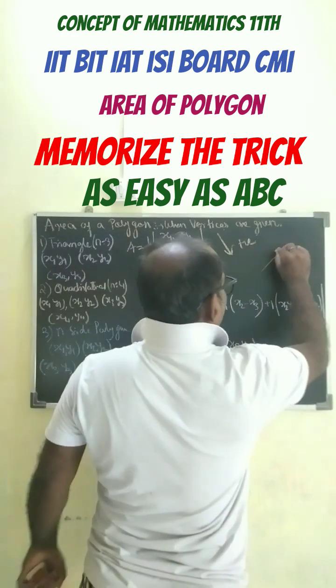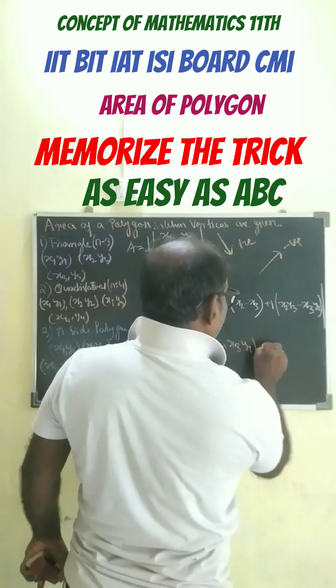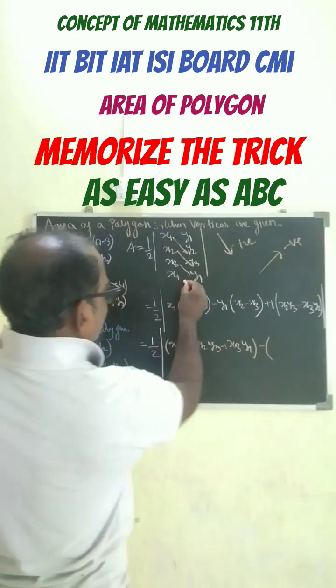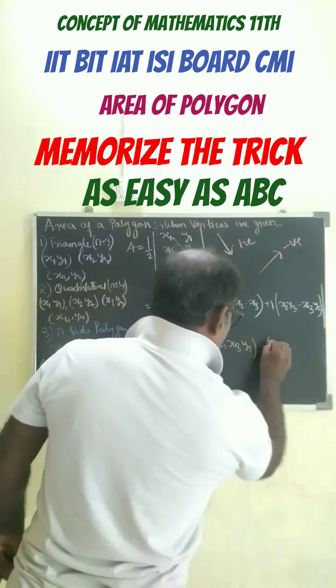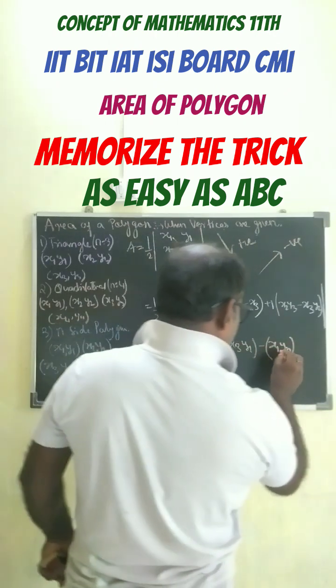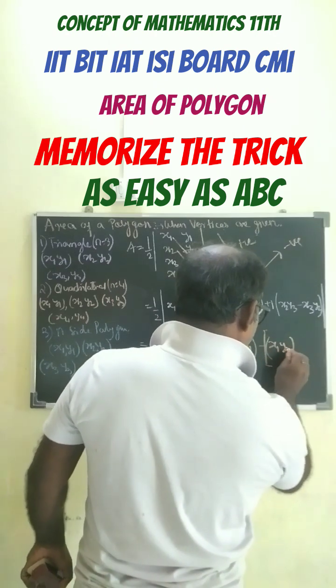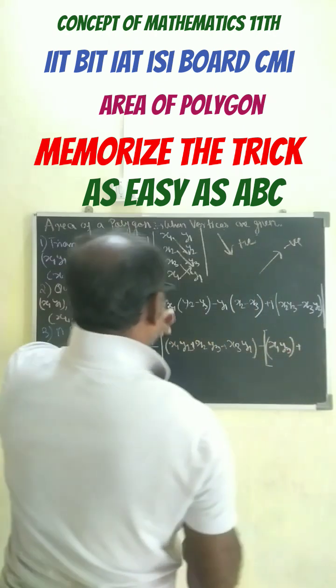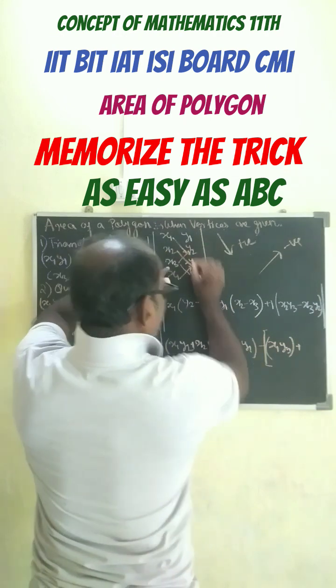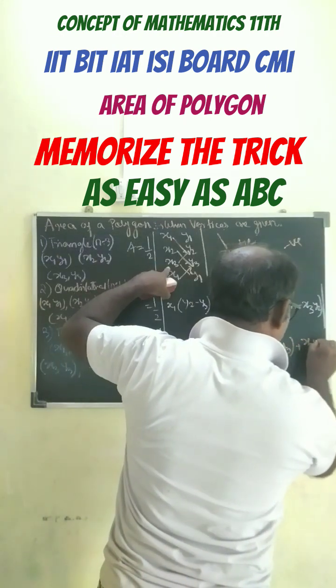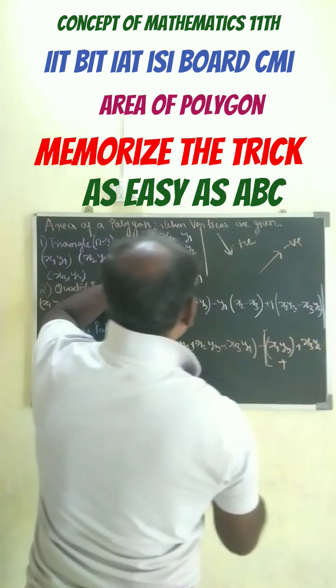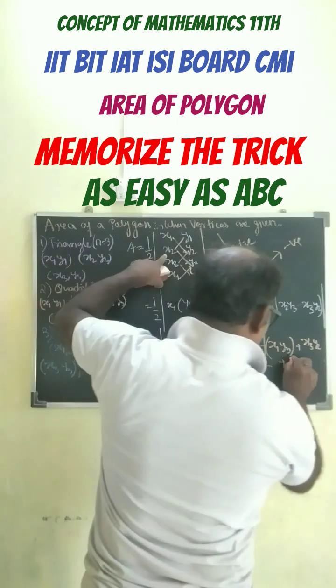Then when we go upside, make it negative. Write down here negative. And just write down here x1, y3 plus x3, y2 plus x2, y1.